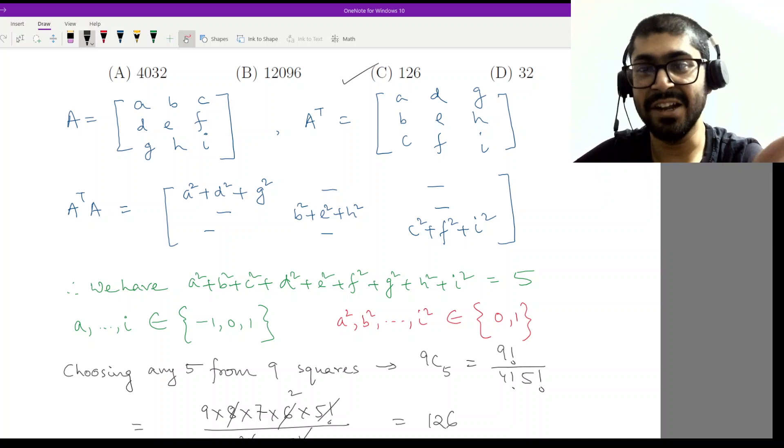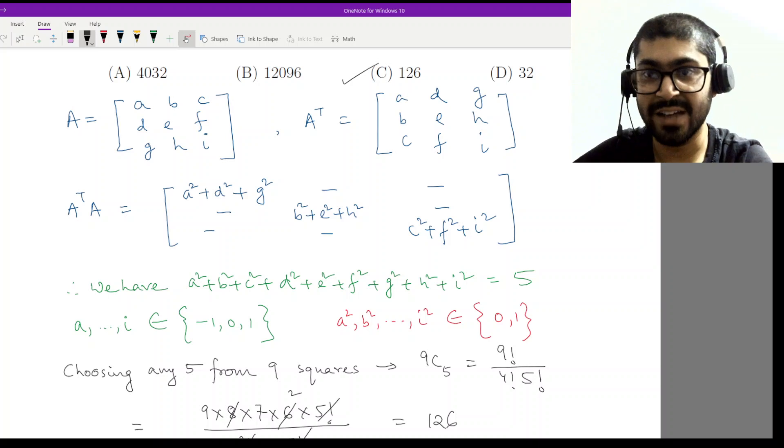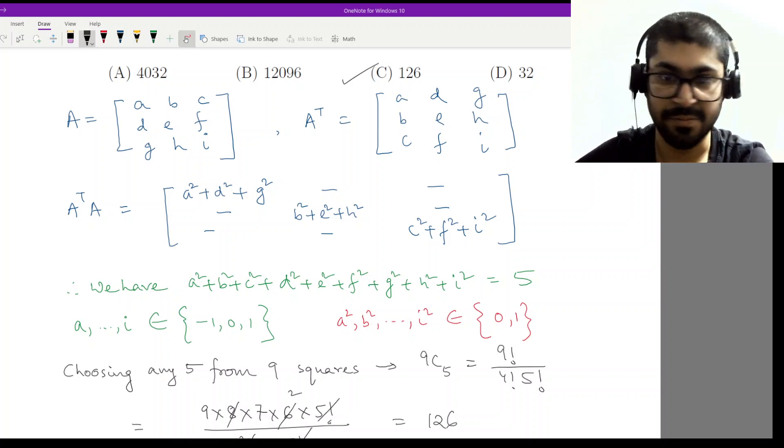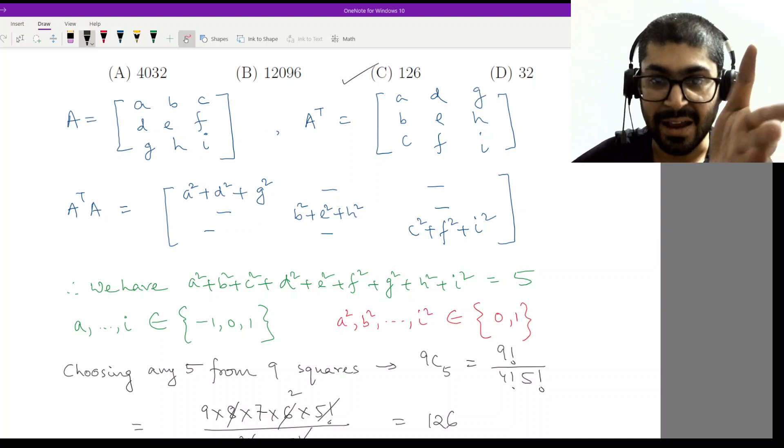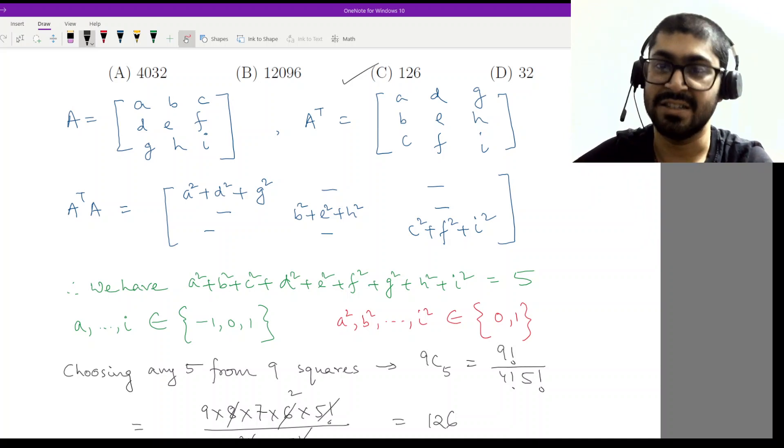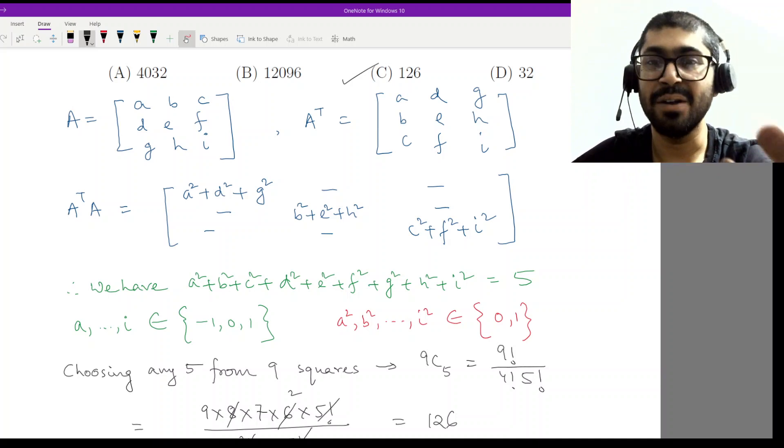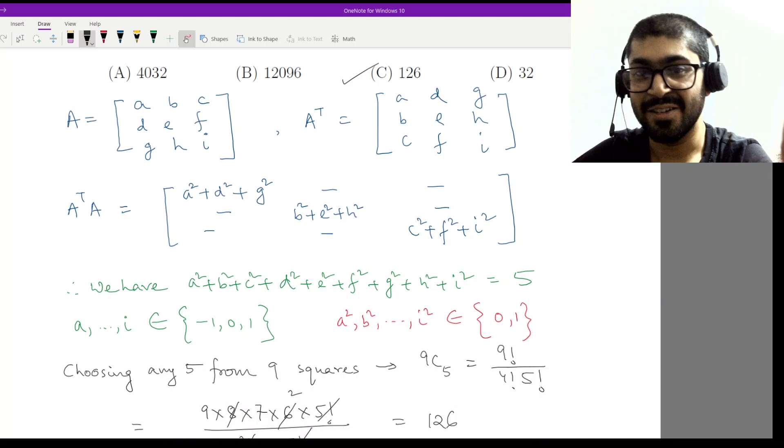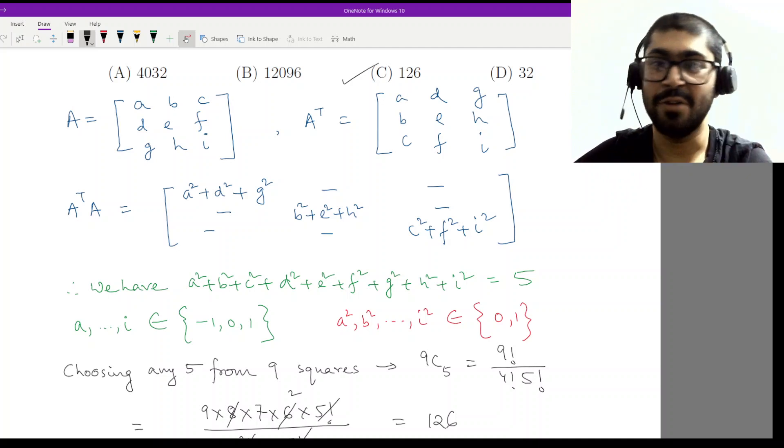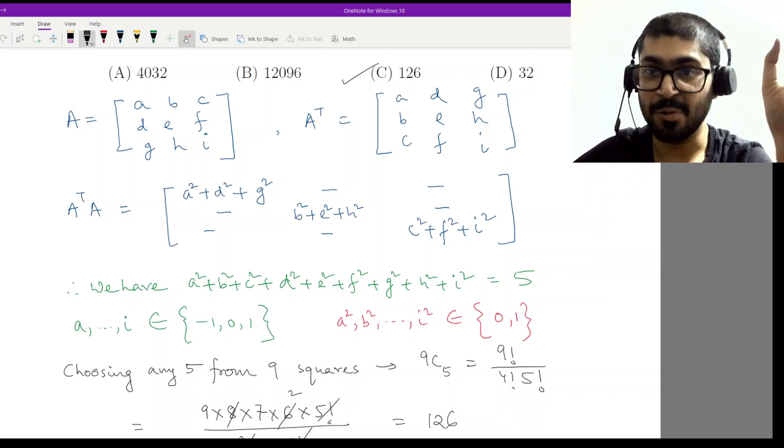It can either be a, b, c, d, and e are ones, so I get five ones, I add up to five, and the rest are zero. The other four are zero. Also it might be a, f, g, h, i are one, rest are zero. We don't know how will we choose them. So the simple formula for choosing is nC5. What is n here? Nine. There are nine of these.